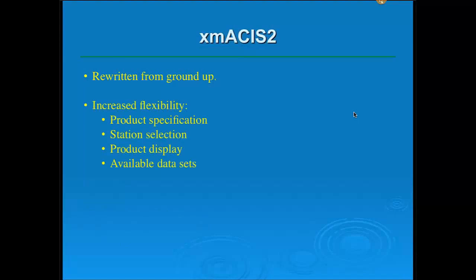The new product has a lot of increased flexibility for you, the users. You can have a lot more control over the product and what things you can specify — things that you didn't have control over, like the number of missing days to allow in a month before not computing a summary statistic for the month. There are a lot of different ways of selecting stations rather than just the static list that you currently have access to in XMASIS. We've changed the way the products are displayed, giving you a lot more control over them. A lot of the products are now interactive so you can really focus in on what you're after.